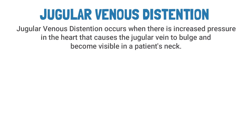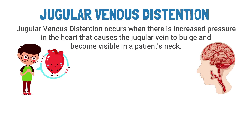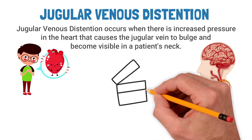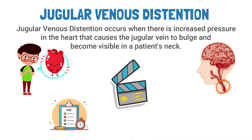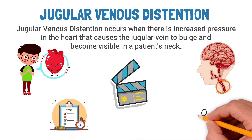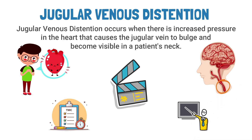Jugular venous distension occurs when there is increased pressure in the heart that causes the jugular vein to bulge and become visible in a patient's neck. In this video, we are going to break down a sample TMC practice question on this topic, so if you're ready, let's get into it.